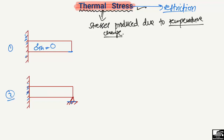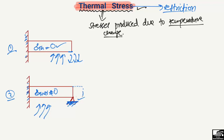In the second body, a support is provided at the other end, creating a restriction, which means thermal stresses will develop inside. So sigma thermal cannot be zero here. If I increase the temperature for this body, it will tend to increase in length. We represent this as delta L — the original length is L, and delta L is the deformation in length due to the increase in temperature.